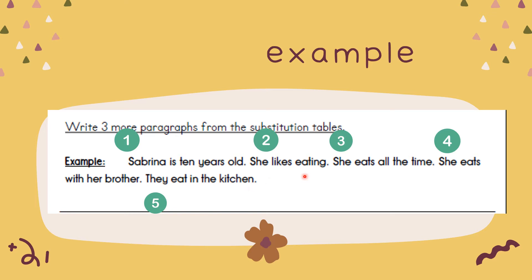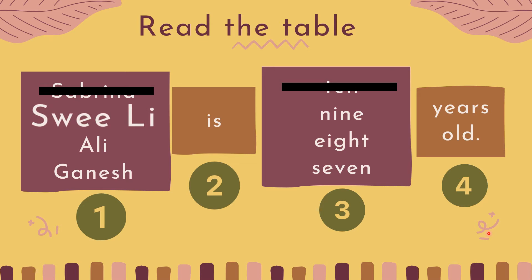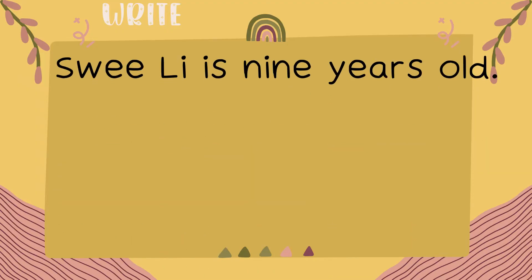Awak hanya perlu salin sahaja. Read the table. Because Sabrina is already done, we take a look at Swilly, number 2. This is the 4th table. You choose: Swilly is 9 years old. You copy this — salin semula di dalam kertas bahagian bawah. Second table: Swilly is 9 years old.